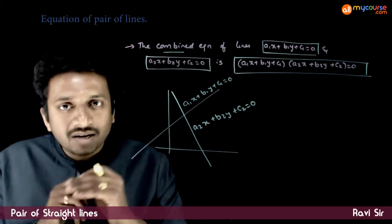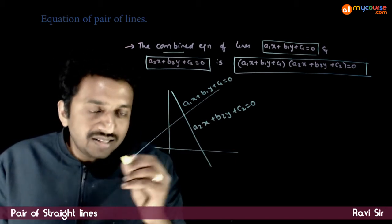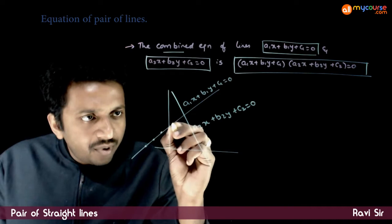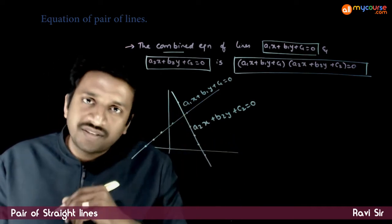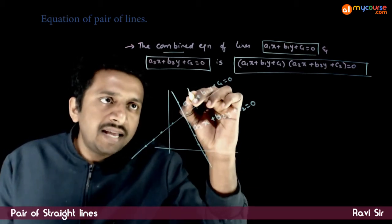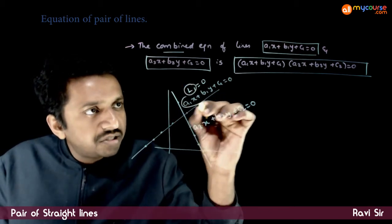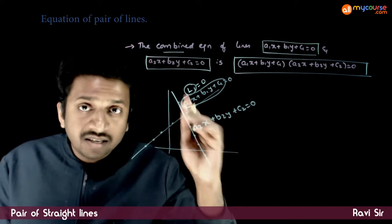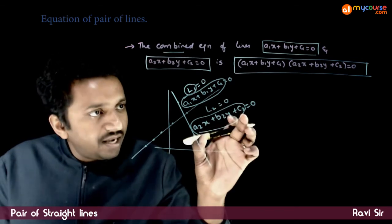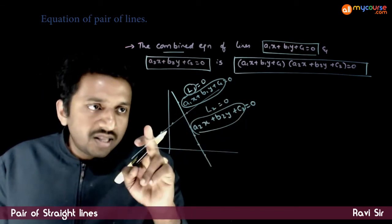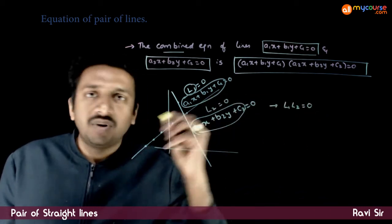Equation means some condition which each and every point on the curve satisfies. So, is there a condition which each and every point on this combined equation satisfies? If this line can be written as l1 = 0, where l1 is an expression, and the second line can be written as l2 = 0, where l2 is an expression, the combined equation is l1 × l2 = 0.